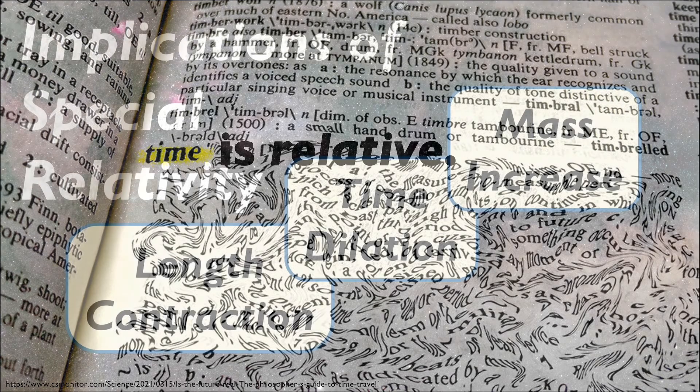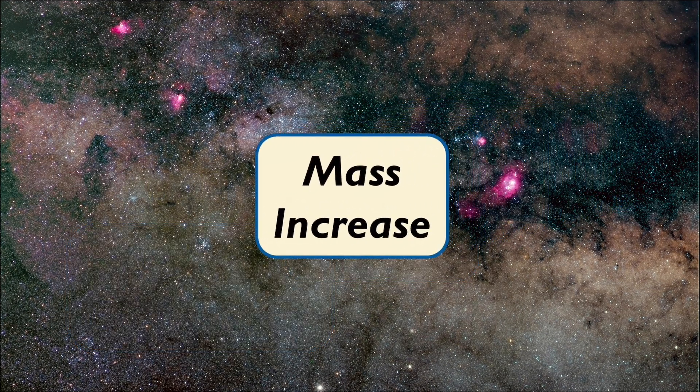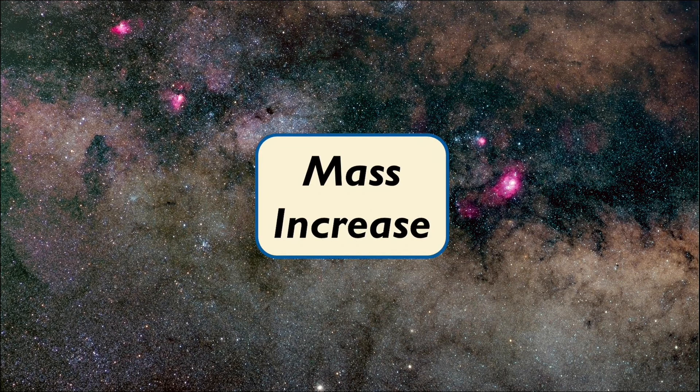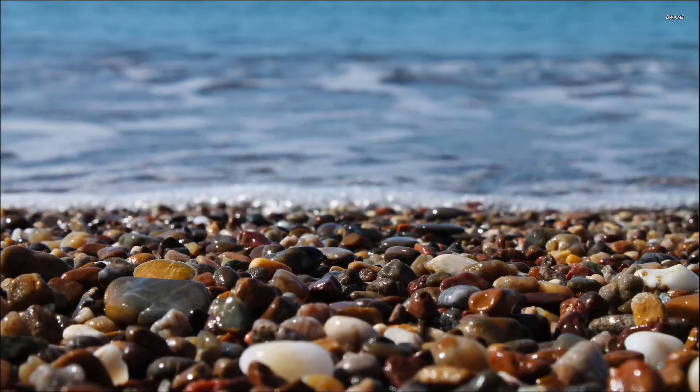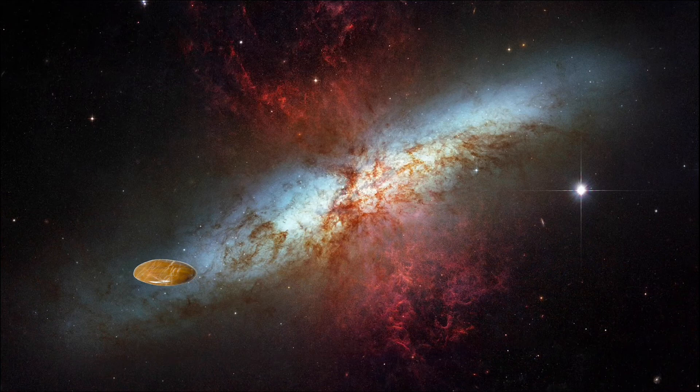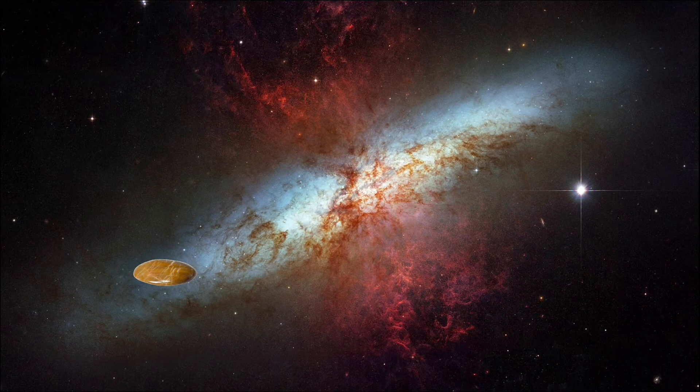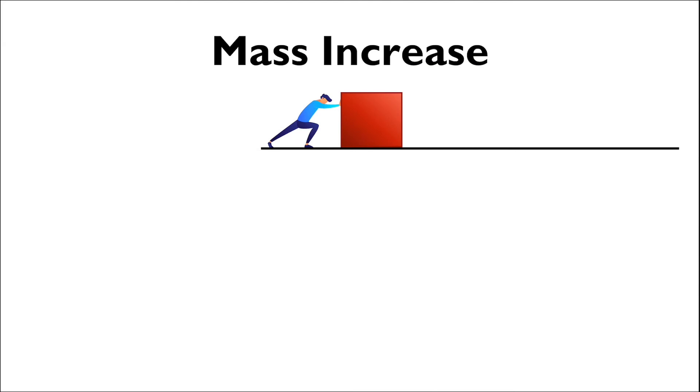Now, the last implication of special relativity that we'll discuss in this video is the relativistic illusion of mass increase. Now, keep in mind, the concept of an object's mass is that its mass never changes. Whether you're a pebble on the beach or a pebble in the vacuum of space, your mass is your mass and that's that. It will not change. So, why do we have this concept of relativistic mass or the illusion that mass increases in the confines of special relativity?